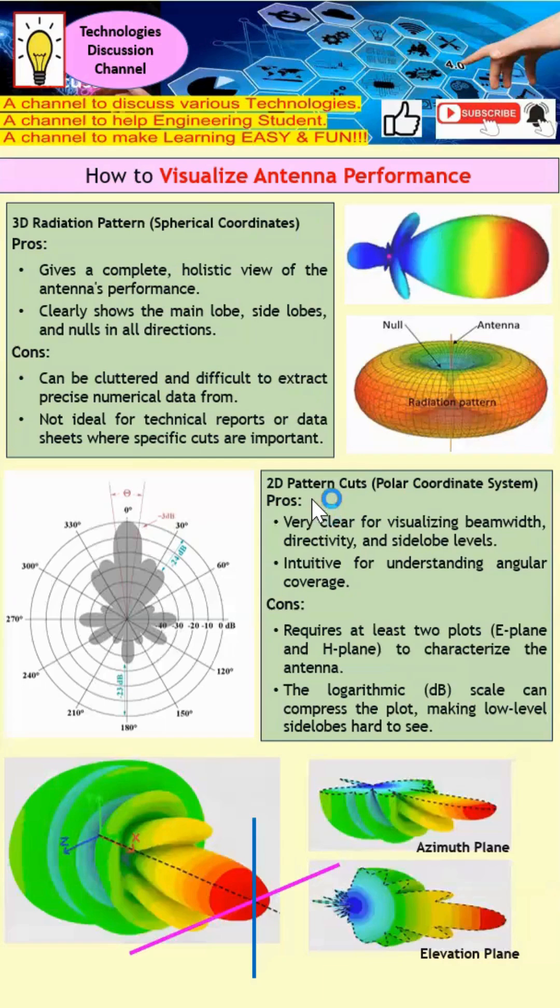The next one is the 2D polar coordinate system. From this diagram, you can clearly visualize the beamwidth, directivity, and sidelobe levels.